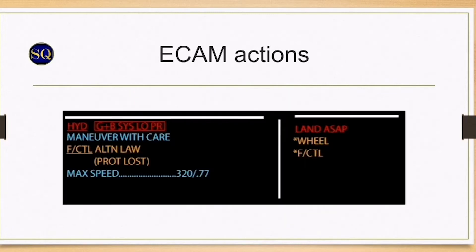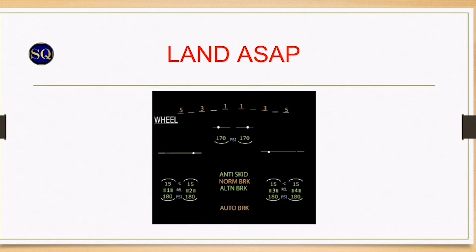Flight control alternate law. Max speed will be 320 knots or Mach 0.77. Alternate law is indicated by the amber crosses on the PFD. Land ASAP in red signifies a time critical situation which requires a landing at the nearest suitable airport at which a safe landing can be made. Pilot monitoring reviews all affected equipment in amber.